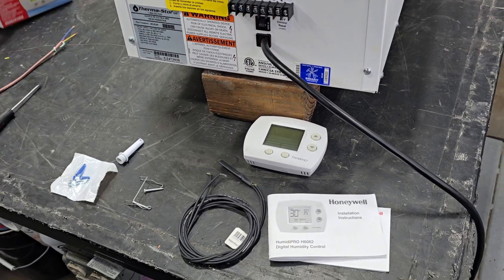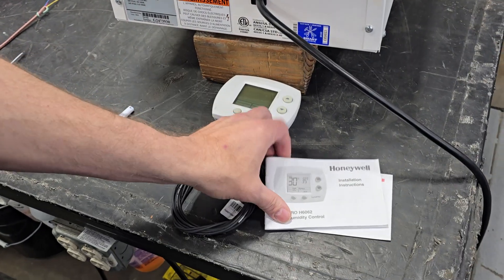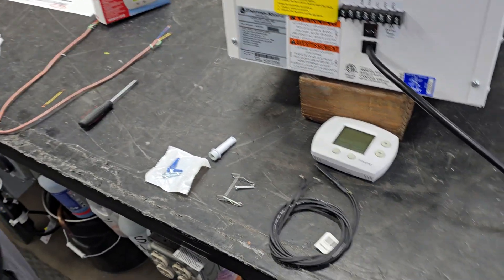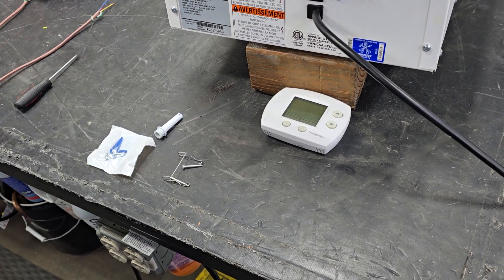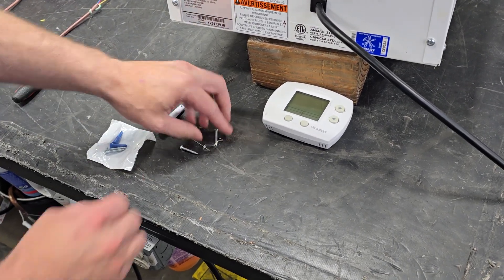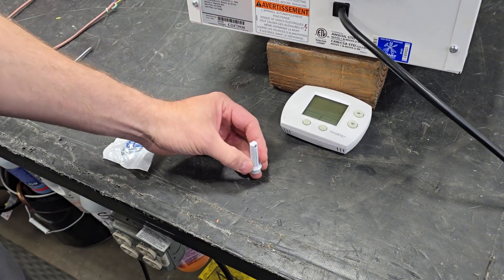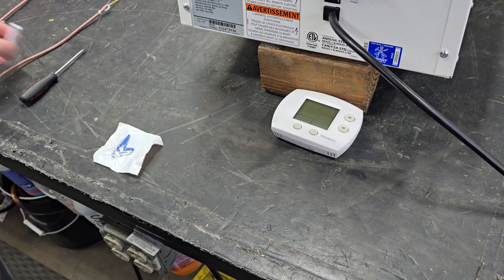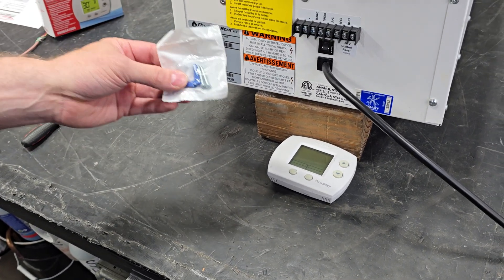In the box you'll get a Humidipro control with instructions. You'll also get a temperature sensor that you won't use, a temperature sensor mount and screws that you won't use, a through-wall probe that you also won't use, and a bag of screws for mounting the control.